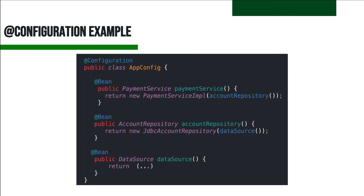To define a scope for a specific bean, we can use the @Scope annotation providing the scope name, for example @Scope('prototype'). Alternatively, we can use specific scope annotations such as @SessionScope. Using the specific annotation is recommended to avoid typos.